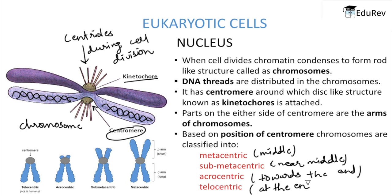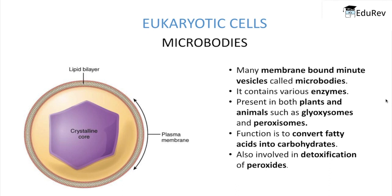Microbodies are many membrane-bound minute vesicles that contain various kinds of enzymes. They are present in both plants and animals, such as glyoxysomes and peroxisomes. Their functions include converting fatty acids into carbohydrates and involvement in the detoxification of peroxides.